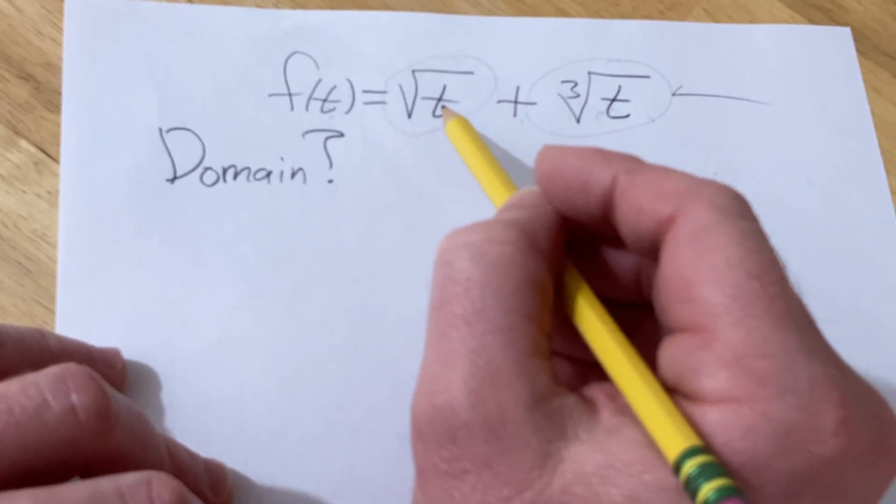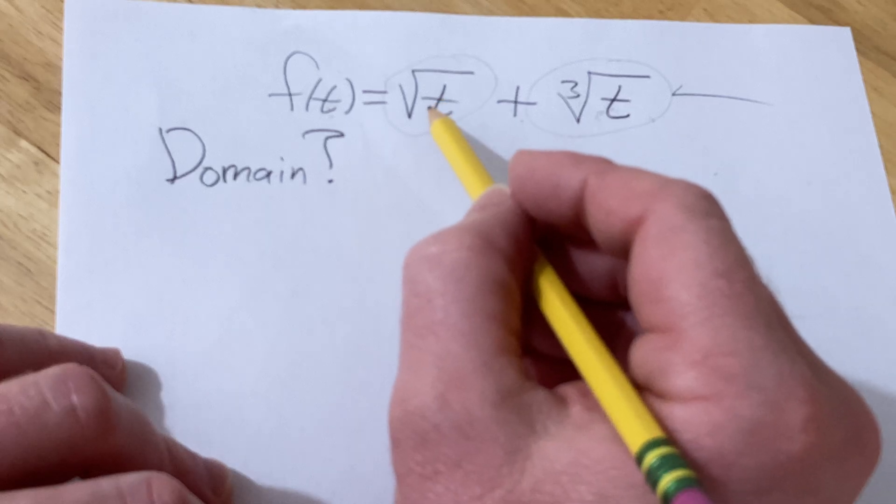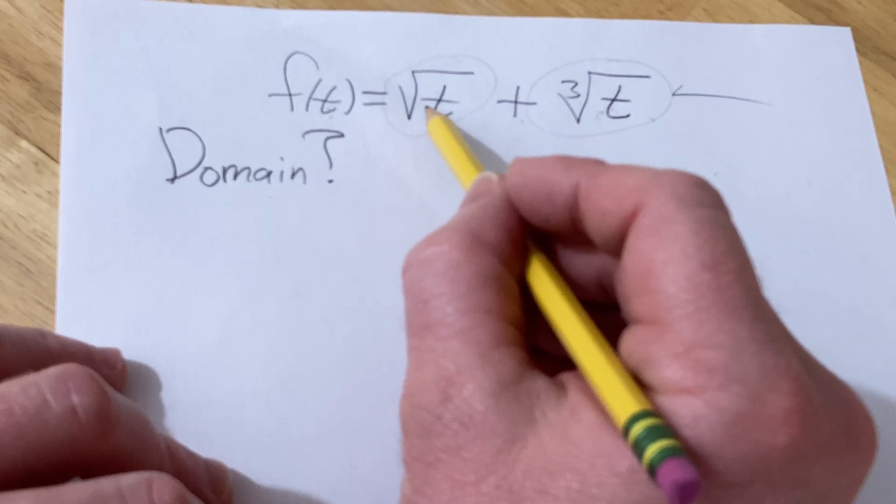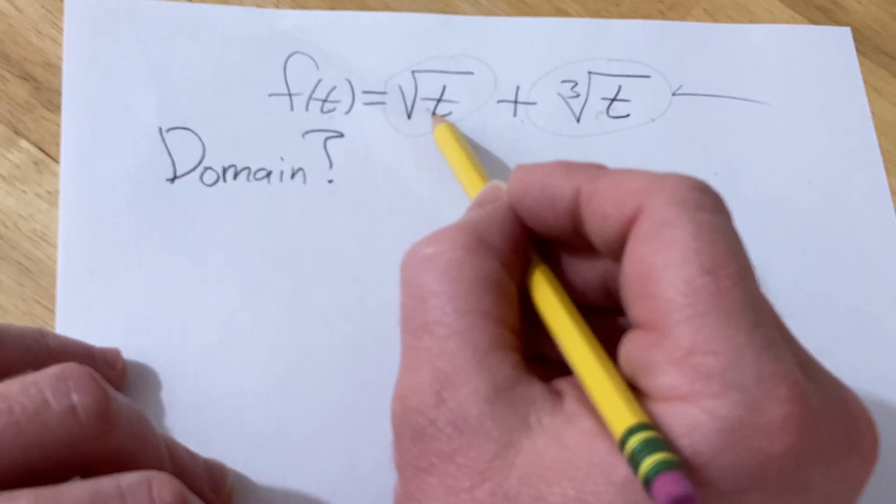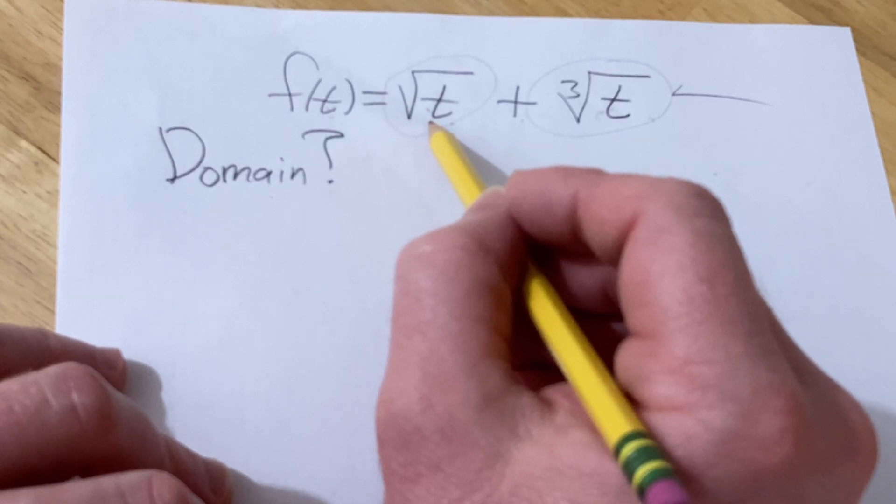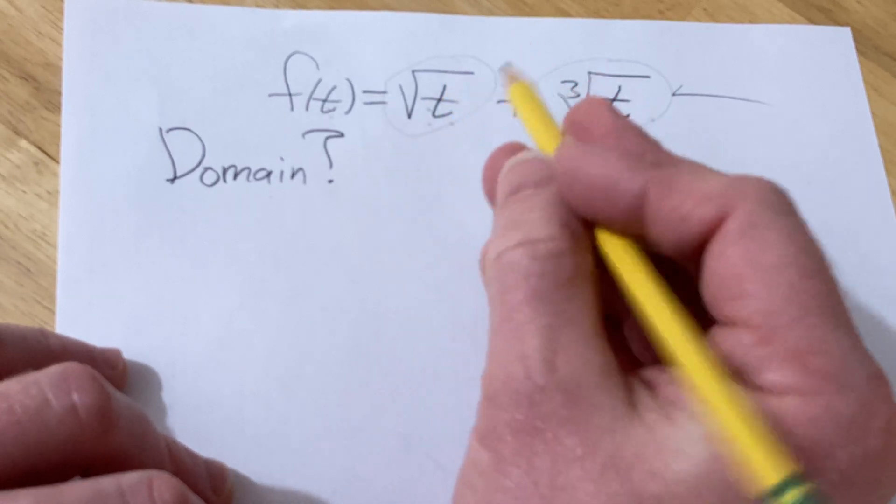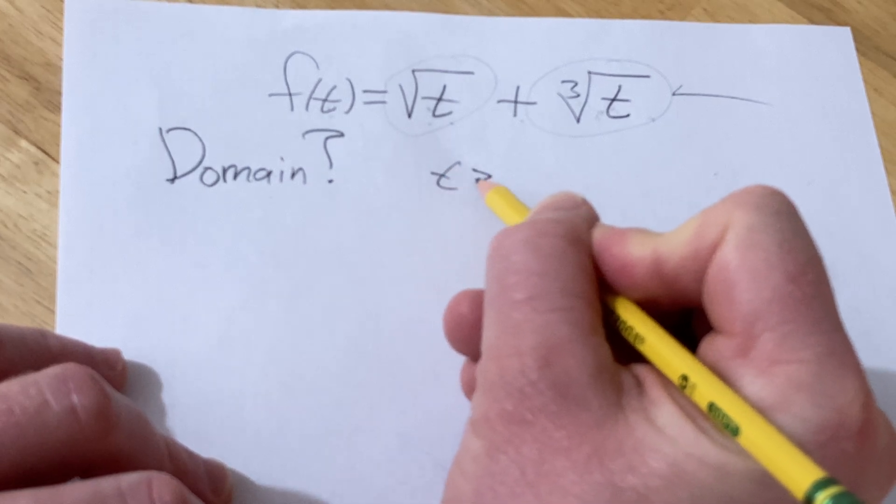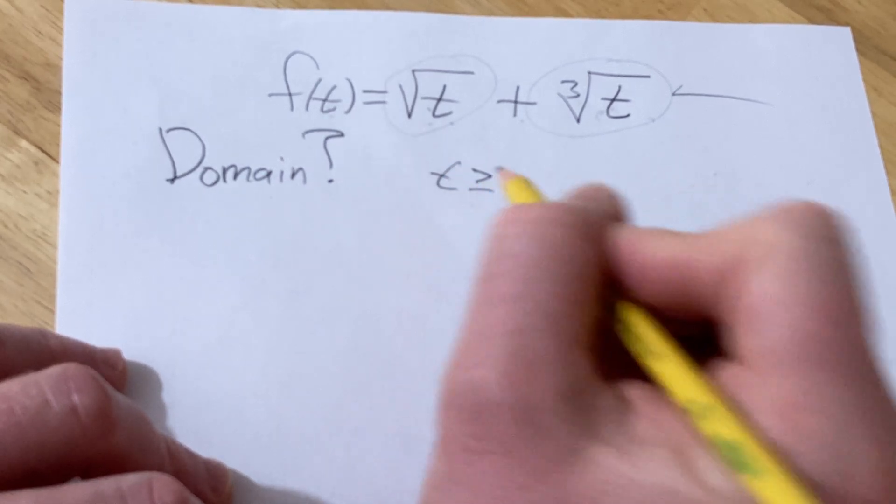But square roots, there's a condition. So basically you cannot plug in negative numbers into square roots because you'll get imaginary numbers and we're dealing only with real numbers. So basically, t can't be negative. So t has to be greater than or equal to zero because it can't be negative.